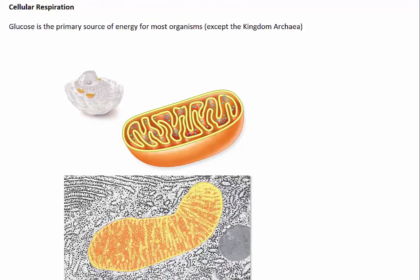All organisms, with the exception of the kingdom Archaea, use glucose as the primary source of energy to drive the thousands of chemical reactions that occur constantly in each living cell.